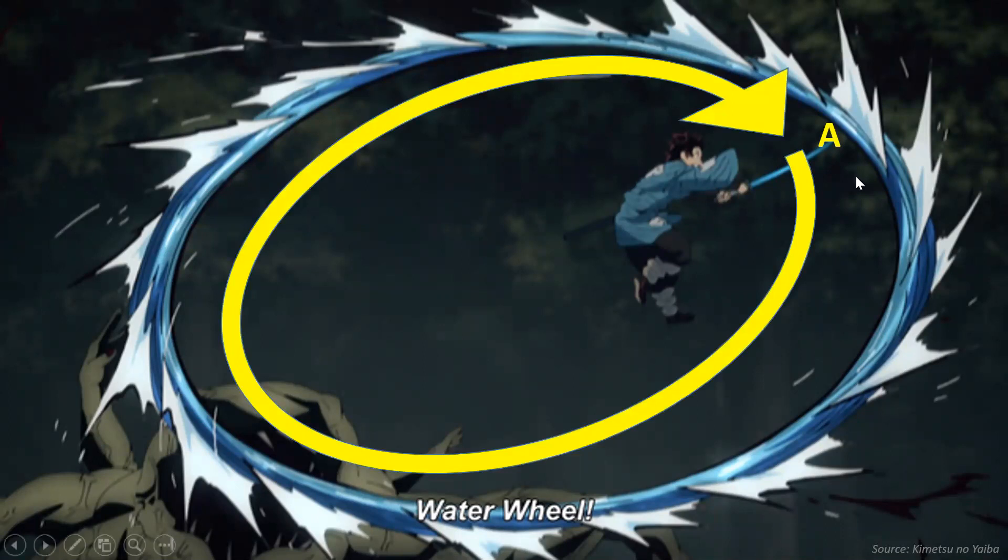So from this one, from this figure, we have a closed path. Okay, current flows from point A back to its starting point. Then therefore, it is called a loop.